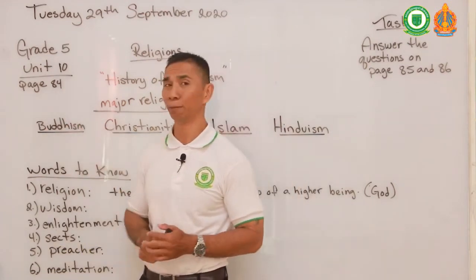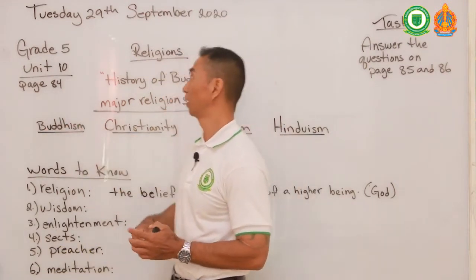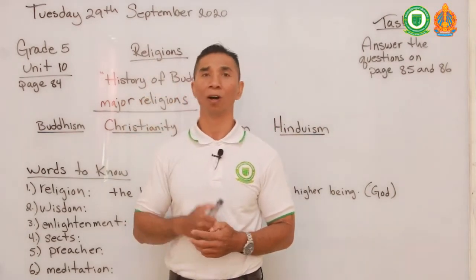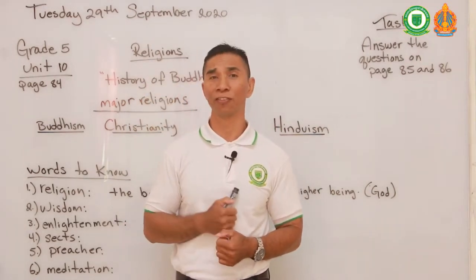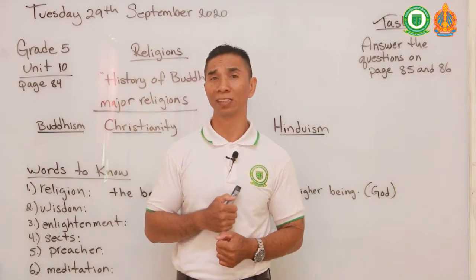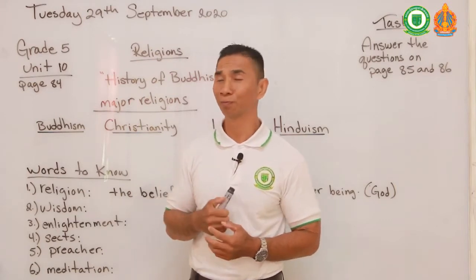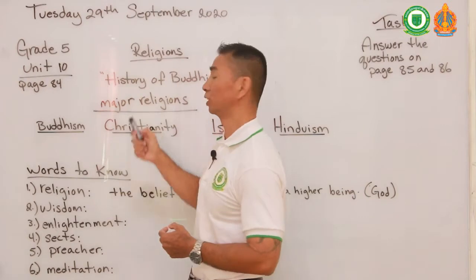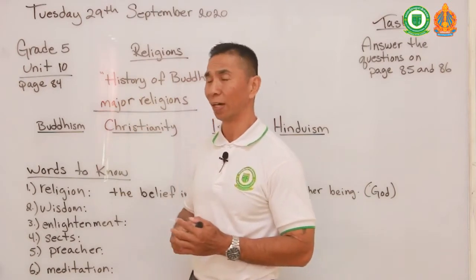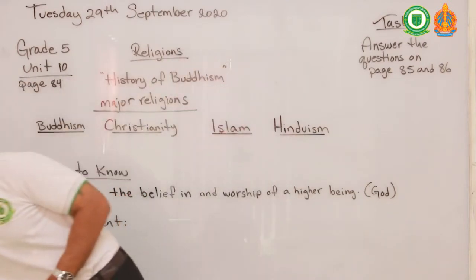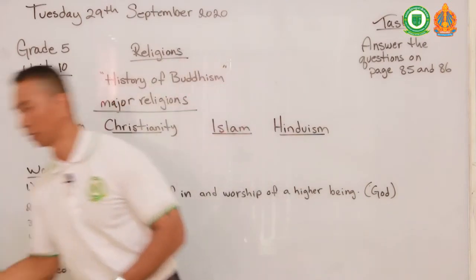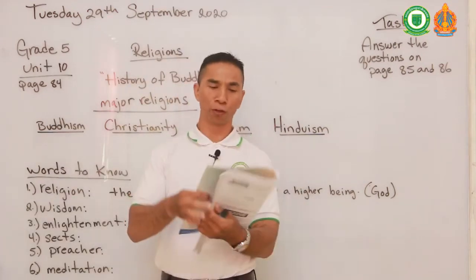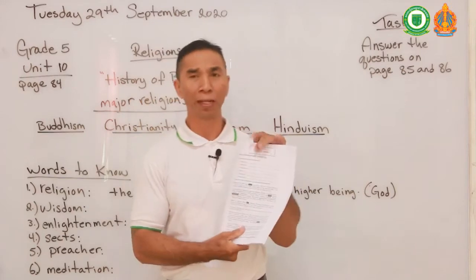We're going to be studying Unit 10, page 84, and our topic will be about religions. Are you religious? What about your family — are they religious? Well, today we're going to be studying about the histories of religions. Please take out your book and turn to page 84.